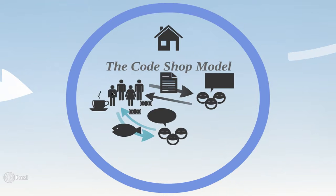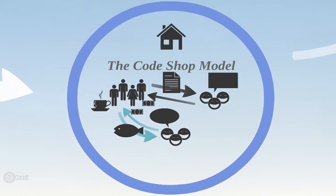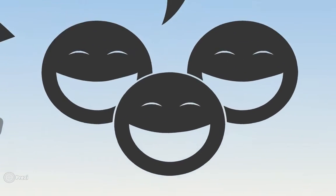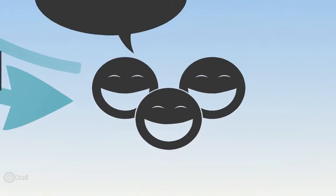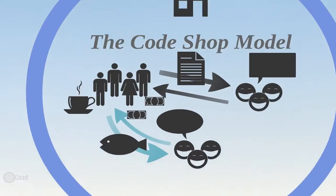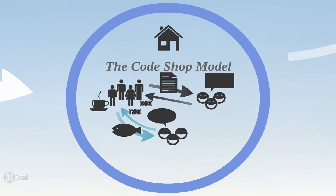Then you get the code shop model. You get a bit of a larger dev team — they drink a lot of coffee. They've got different groups of customers that have different needs. At this stage there's still fairly direct communication between the people who need the code, the people who write the code, and the people who use the code. This is something you'll still see in small B2B operations.